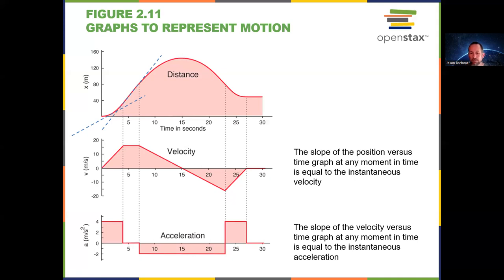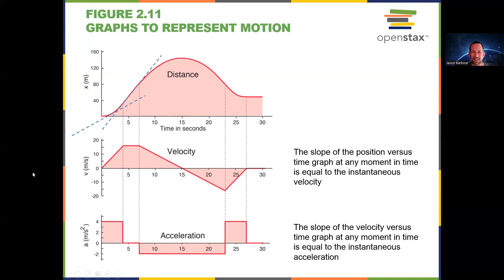Is it possible for that to happen? Absolutely. An example in horizontal motion is a cart with a fan on it. Push the cart so the fan acts to slow it down — the cart gets slower and slower, stops, then comes back in the other direction, getting faster and faster. In the vertical direction, if you toss something up, it gets slower and slower, then comes back down getting faster and faster, with constant acceleration the whole time. We'll get to that in module three.